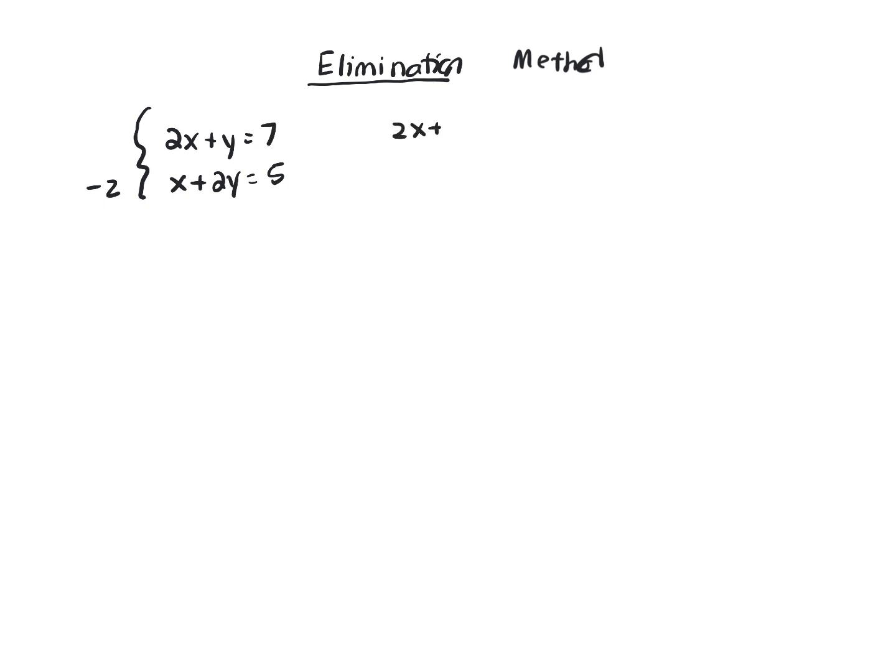Now let's copy over the top equation. Now multiply through by negative 2. It's negative 2x minus 4y equals negative 10.